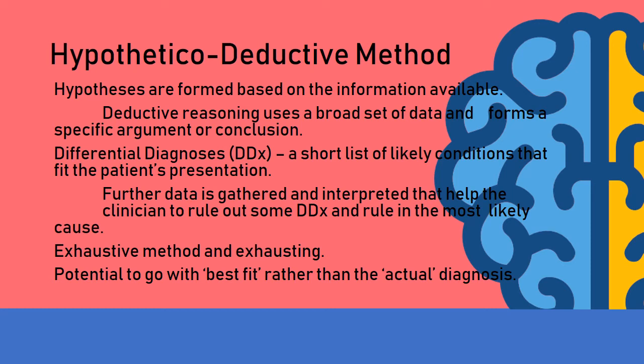People argue that hypothesis testing involves picking from a list of perhaps 50 causes of chest pain or 25 causes of sore throat, and question how we then add weight to our argument to choose the most likely one. Do people just tend to find the one that fits best and go with that rather than finding the true, more accurate diagnosis? Some criticisms are that it's a very long-winded approach — we gather a lot of data and from it need to rule out certain diagnoses.